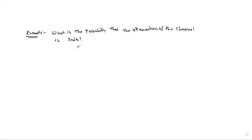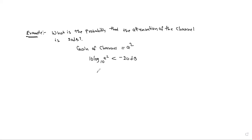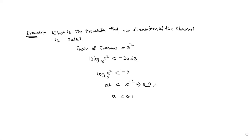The gain of the channel is equal to a². So 10·log₁₀(a²) < −20 dB, where log₁₀(a²) < −2, meaning a² < 10^(−2) = 0.01. Therefore a < 0.1.